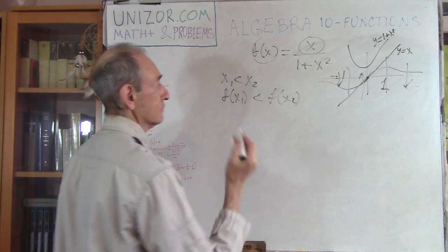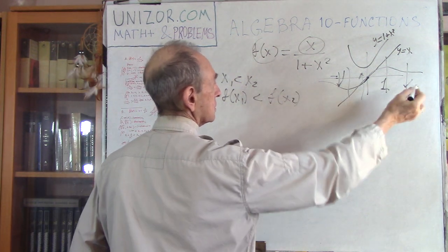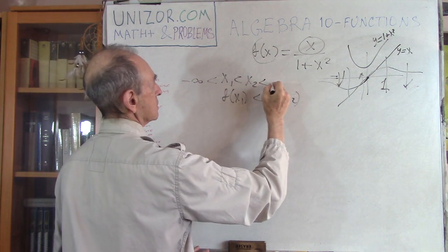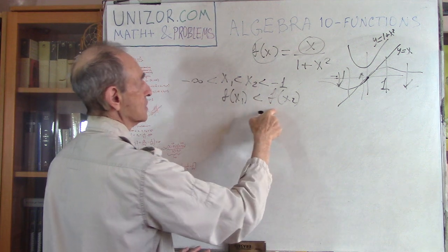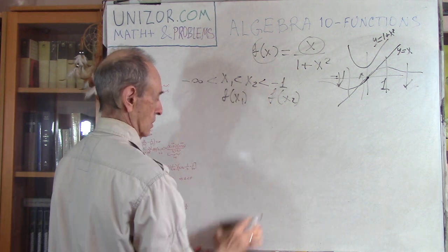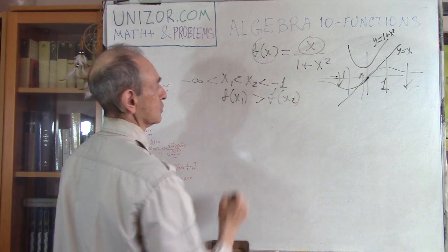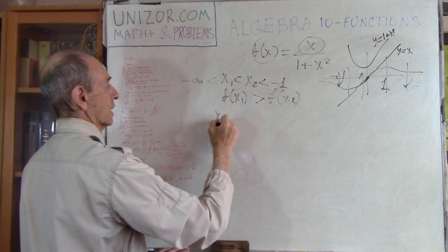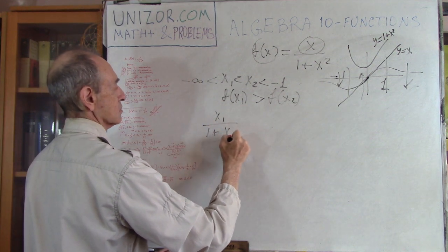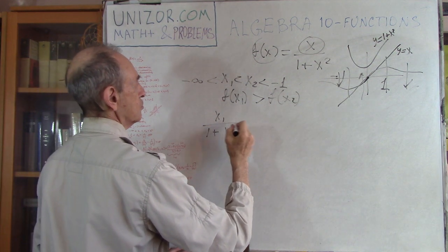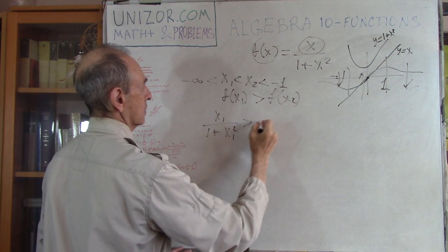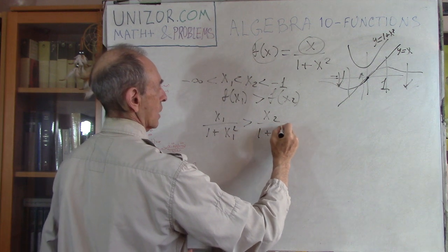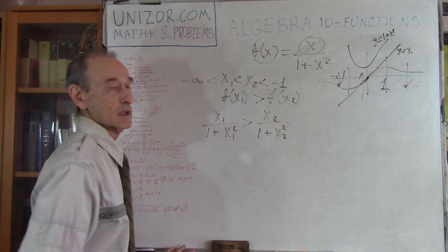We have not just any interval — we have three specific intervals. Let's assume the first one: from minus infinity to minus 1. Actually we have to prove the other way around — we have to prove this function is decreasing here. So we have to prove that x1/(1 + x1²) is greater than x2/(1 + x2²). We have to prove this inequality.